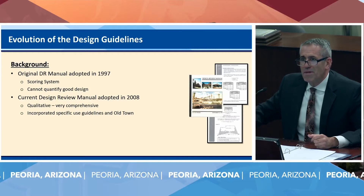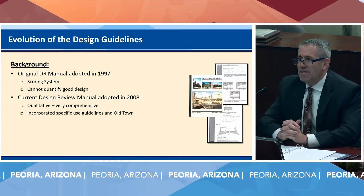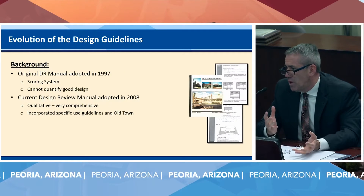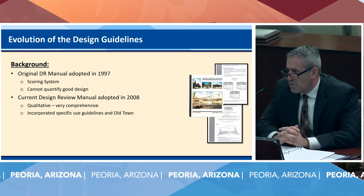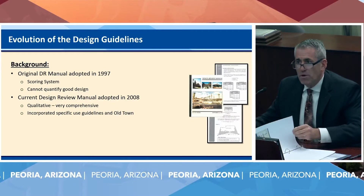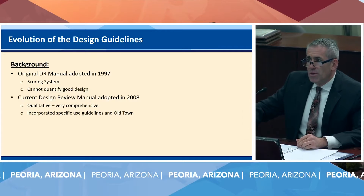Let me talk about the evolution of design guidance briefly. Our first design manual was adopted in 1997 as a scoring system — we actually scored buildings and sites, requiring a minimum score in certain areas. It was a great starting structure, but we learned you can't quantify good design. You might have a passing score but not be completely satisfied with the result. So in 2008, we adopted the current version of the design manual — very comprehensive and qualitative. We adopted policies for specific use guidelines such as big box development, drive-throughs, gas stations, utility boxes, and special sections for Old Town and Lake Pleasant Parkway. Now we're working on the third version, which we're terming the community design guidelines.